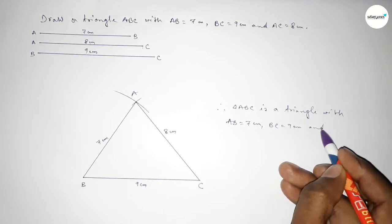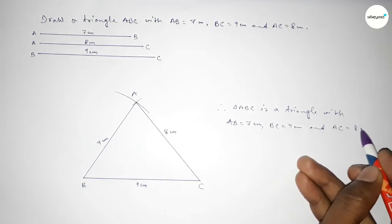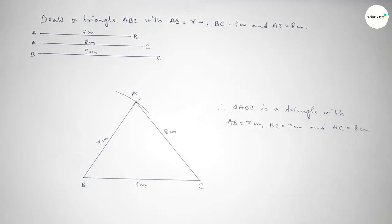Triangle ABC is a triangle with AB equal to 7 centimeter, BC equal to 9 centimeter, and AC equal to 8 centimeter. That's all. Thanks for watching — if this video is helpful to you, please share it with your friends. Thanks for watching.